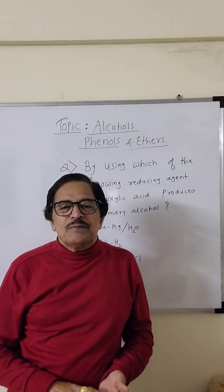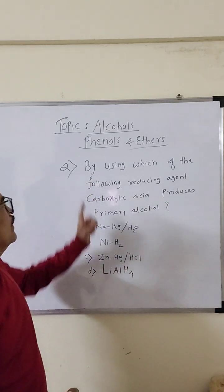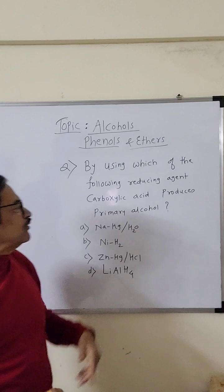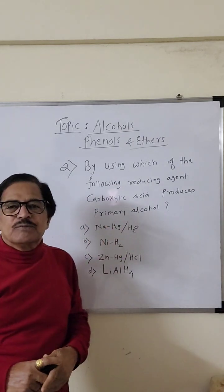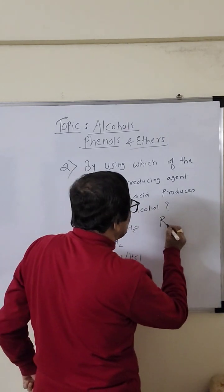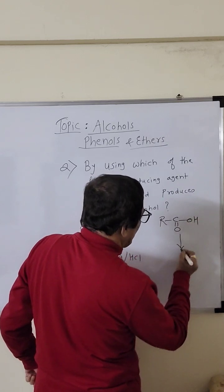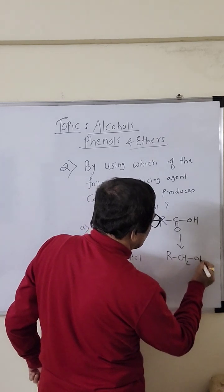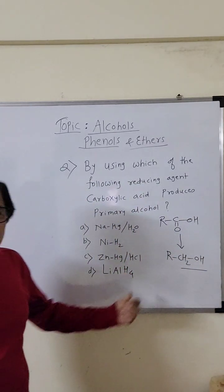This is an information-based MCQ and you should have perfect knowledge. By using which of the following reducing agents does carboxylic acid produce a primary alcohol? Carboxylic acid is COOH, and to produce a primary alcohol, the CO must be converted into CH₂. So a reduction is required — by which reducing agent?